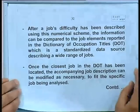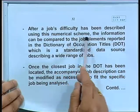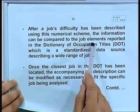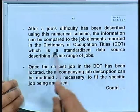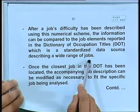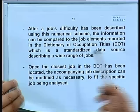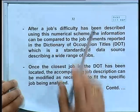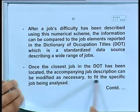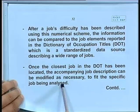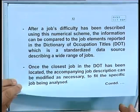After a job's difficulty has been described using this numerical scheme, the information can be compared to the job elements reported in the Dictionary of Occupational Titles, DOT — a standardized data source describing a wide range of jobs. From your particular job you go to the reference and compare. Once the closest job in the DOT has been located, the accompanying job description can be modified as necessary to fit the specific job being analyzed. Unless you actually do it, you would not be able to fully visualize it, but the idea is to get you an exposure to the scientific ways of doing job analysis.